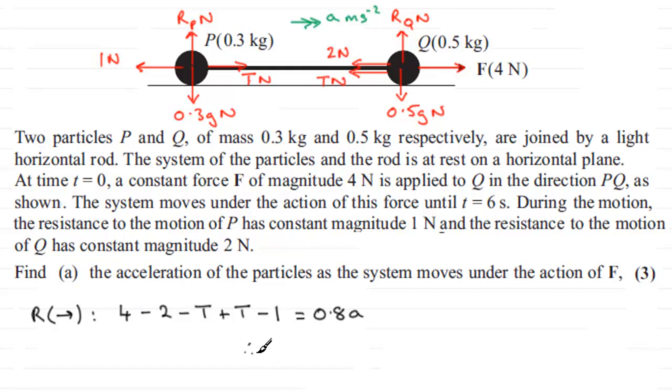Divide both sides by 0.8, you get A equals 1 divided by 0.8, and that leaves us with a result of 1.25. So the acceleration is 1.25 meters per second per second.